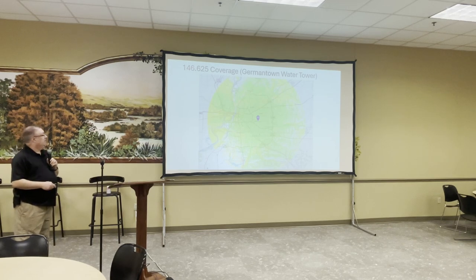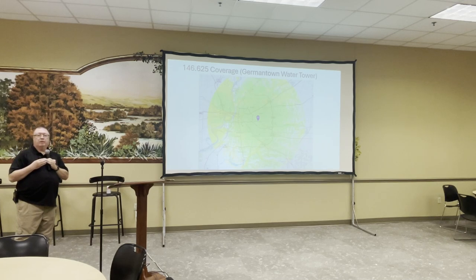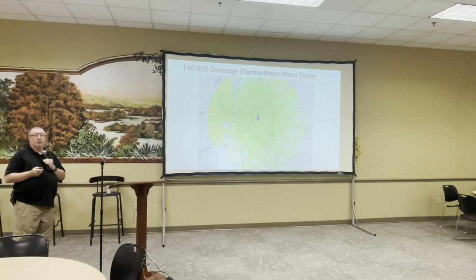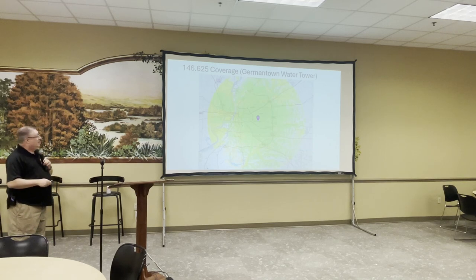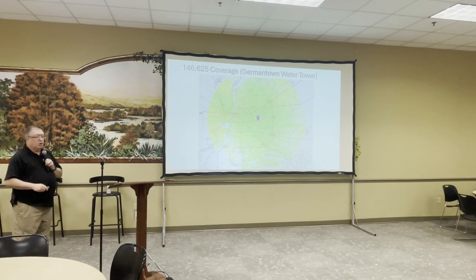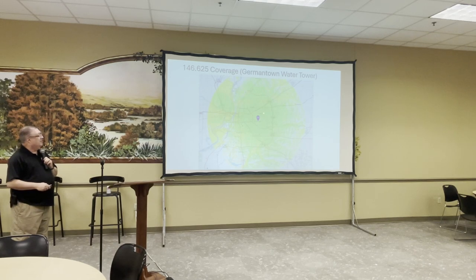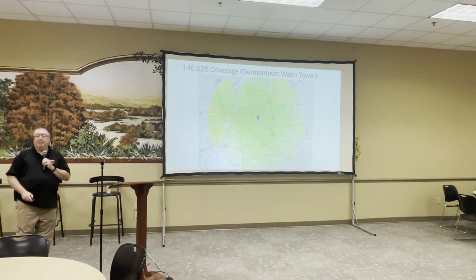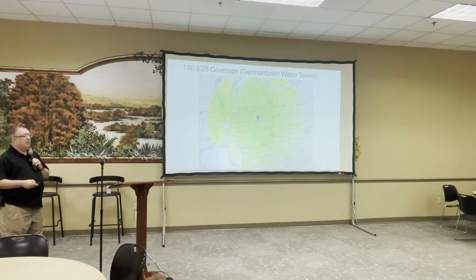Then we've got the Germantown repeater on the water tower. If you know where the railroad tracks are in Germantown on Germantown Road — there are two water towers there, and I think we're on the old one. Once again, it's not on top of the water tower, it's on the side. So you get some shadows on one side where you can't quite key it up even on a mobile with 50 watts. Get a little closer and it's fine. Germantown's got pretty good coverage overall — you'd probably get into it fine from Cordova. Thanks, Jelly, for climbing up there and sticking it up there for us.